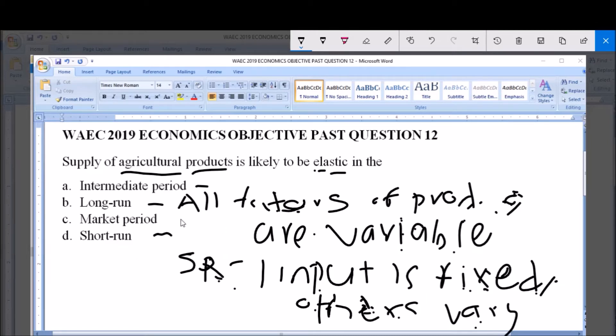Now, the intermediate period, as the name implies, is between the long run and short run period.